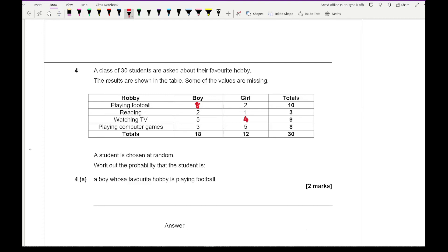It says work out the probability that a boy whose favourite hobby is football. Well that's going to be 8 over the total which is 30, and we can simplify that fraction as 4 over 15. I would say where the two marks come from is 1 by working out the missing numbers being 8, writing it as a probability, and then obviously simplifying it.